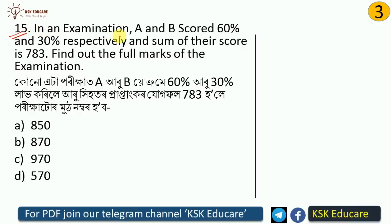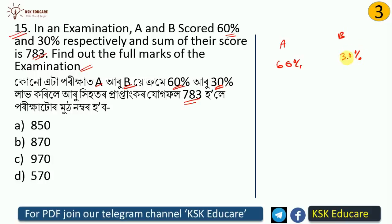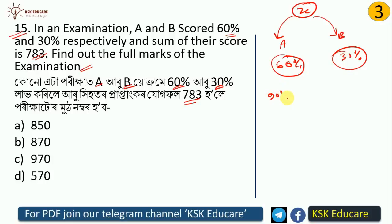In an examination, A and B scored 60% and 30% respectively. The sum of their scores is 783. Find the full marks of the examination. A scored 60% and B scored 30%, so together they scored 90% of the total. So 90% of the full marks equals 783.